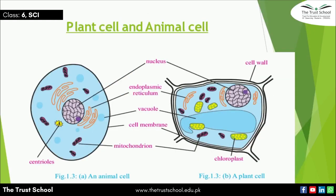We will talk about plant cells and animal cells side by side so that we can find differences. In animal cells, there are a number of small vacuoles present. In plant cells, there is a single large rigid vacuole present at the center.